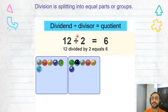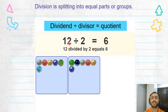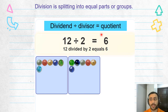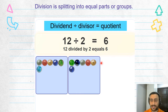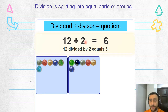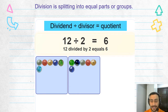Now look at this one. What's the dividend here? 12. What's the divisor? Two. What's the quotient? Six. See? This is the visual picture of 12 divided by two, which equals six.